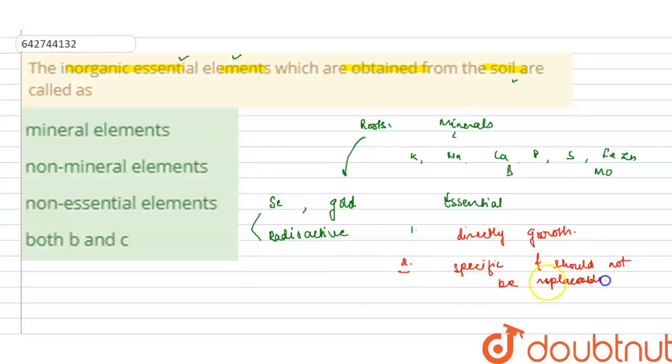Third is that that element should be directly involved in the metabolism of the plant, directly involved in the metabolism of the plant. So these are the three factors that make an element essential for the plant growth.